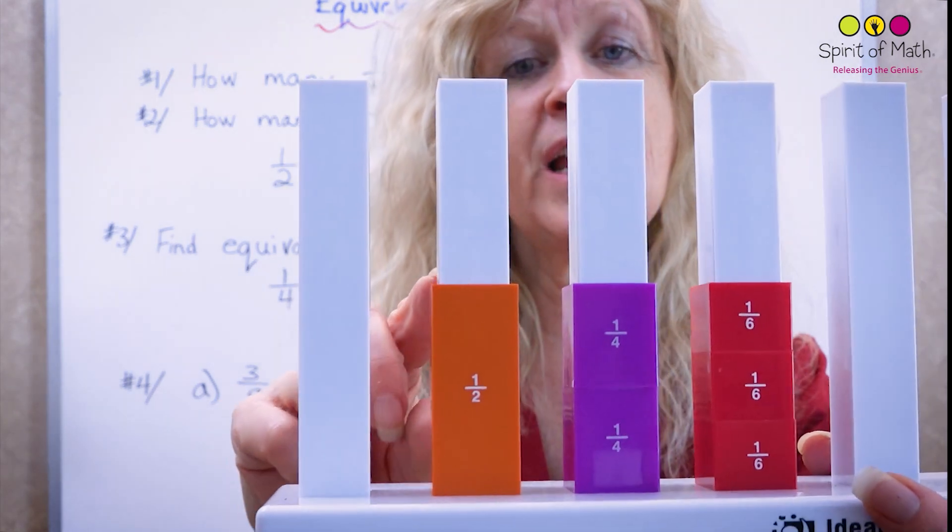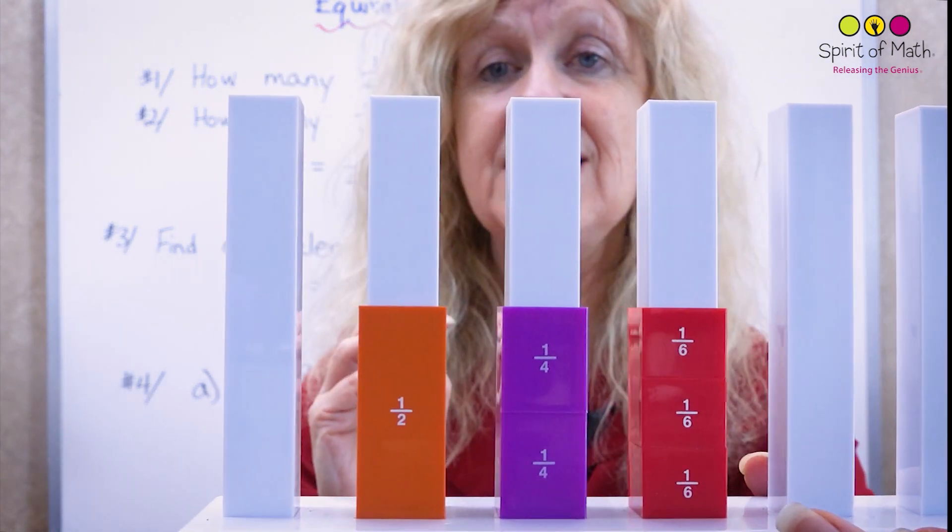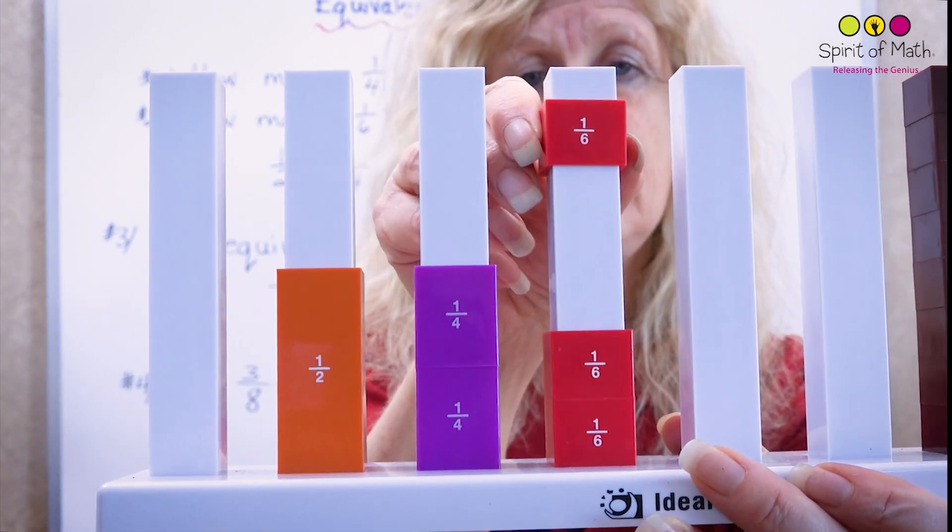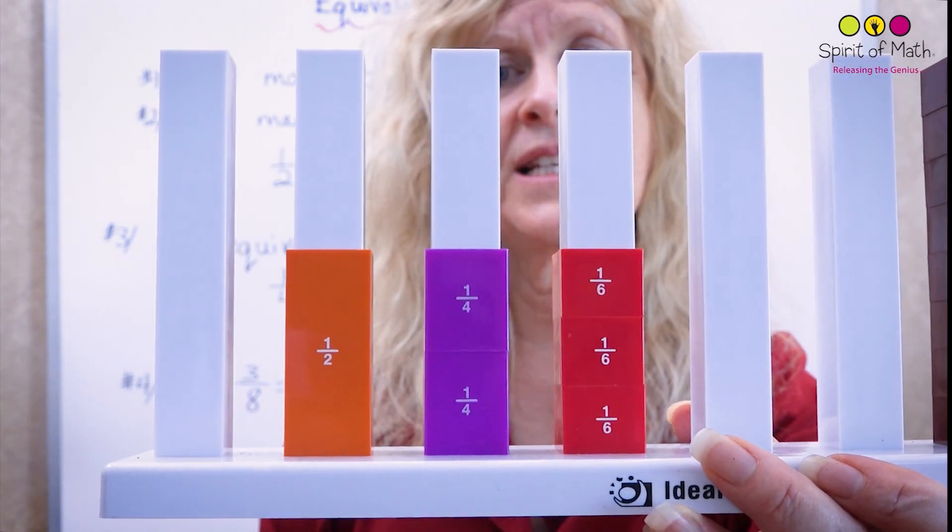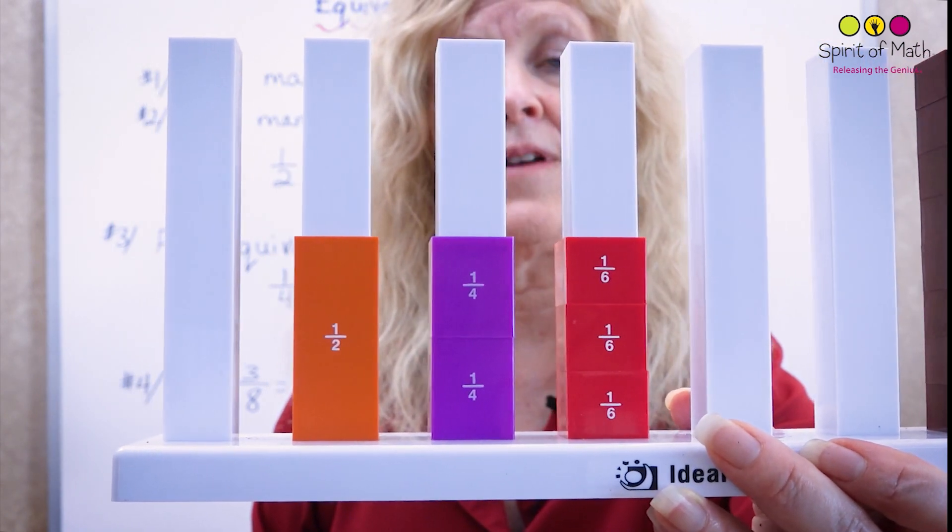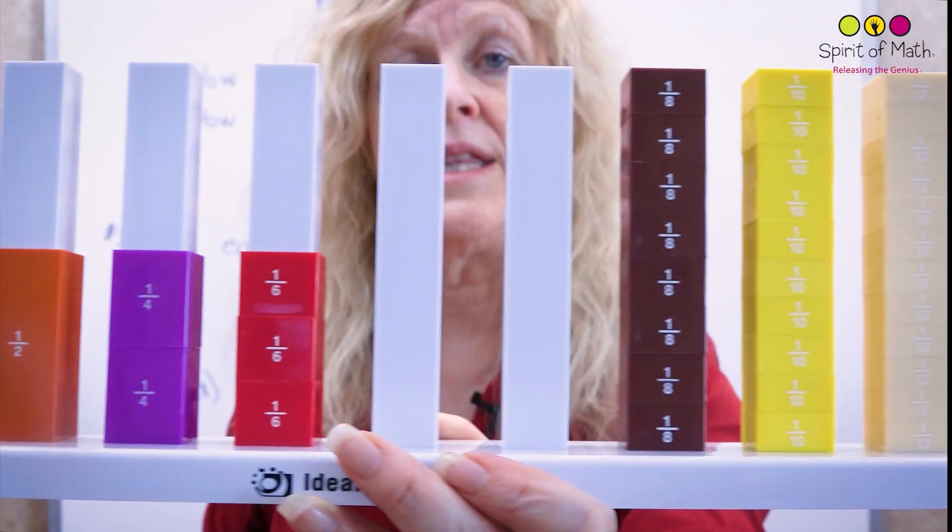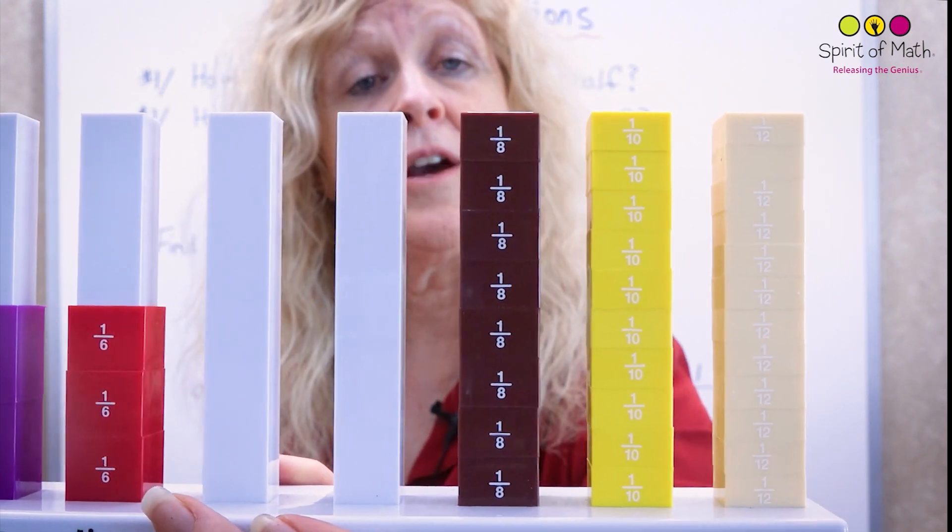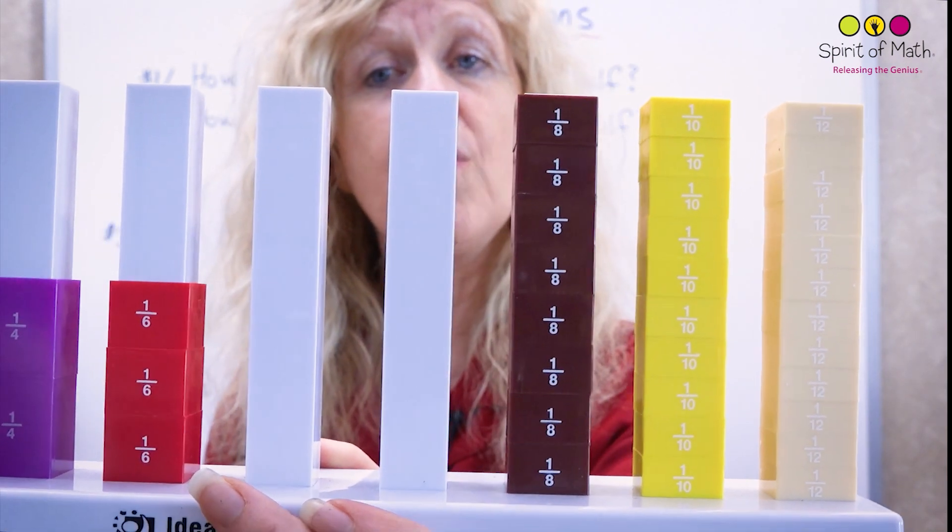Now I'm going to ask you, how many sixths make one-half? And look at this. You've got one, two, three sixths make one-half. So you could do that with tenths and twelfths if you want or eighths if you want as well and figure out how many of those would make one-half.